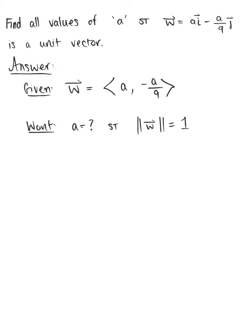So we want to start by finding the magnitude here. So we'll have the square root of a squared plus a squared over 81, and this is equal to 1.